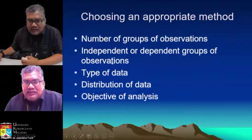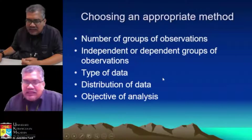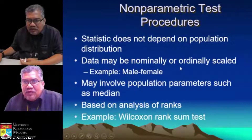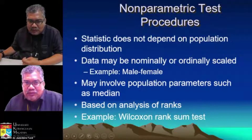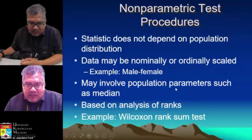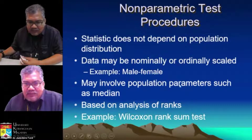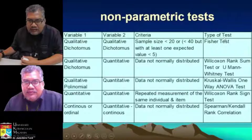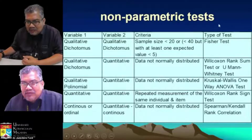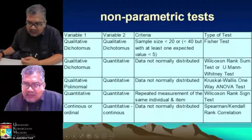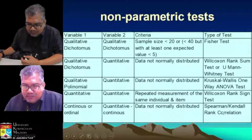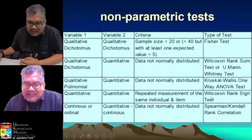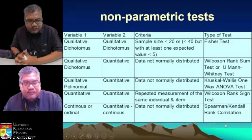The type of technique depends on your number of groups of observation and the type of data. The beauty of non-parametric test procedures is that they do not depend on the population distribution — data may be nominal or ordinal scale. Instead of using mean and standard deviation, you use parameters such as median or rank. It is based on analysis of ranks, like the Wilcoxon rank sum test. Examples of non-parametric tests include: Fisher exact test, Wilcoxon rank sum test (also called Mann-Whitney U test), Kruskal-Wallis one-way ANOVA test, Wilcoxon signed rank test, and Spearman rank correlation.